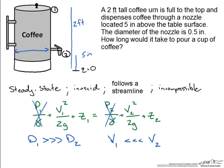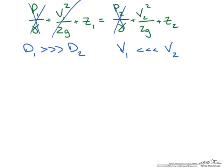This leaves us with the form of the equation where z one is equal to the velocity at point two squared over two g plus z two.